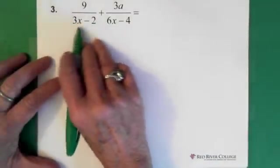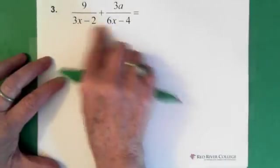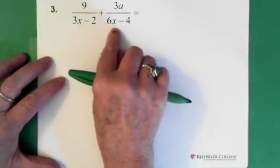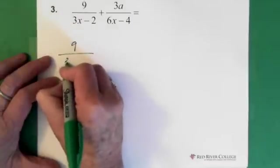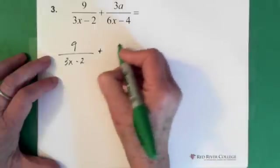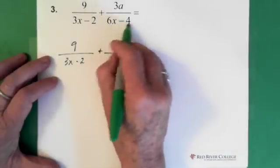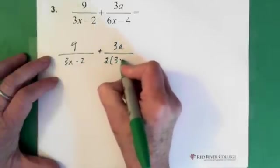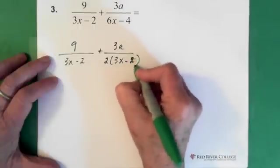So now, we sort of stop and take a look at this. And notice there's something similar about them. This piece here is factorable. So that's the first thing you do is factor it. So let's leave the first one alone. So 9 over 3x minus 2. Added to 3a. You can see that we can take a 2 out of both these terms. So we pull out a 2. And we're left with 3x minus 2. Alright.